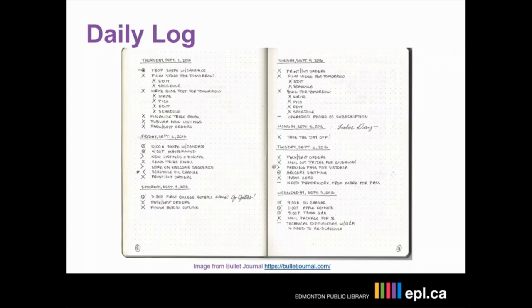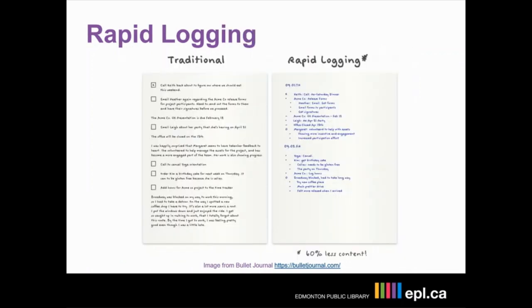You'll notice in each of these there's been these different symbols — little dots, X's, arrows — and that is where we get into rapid logging. Rapid logging is what we call the language of bullet journals.